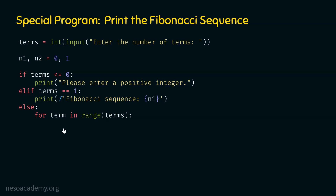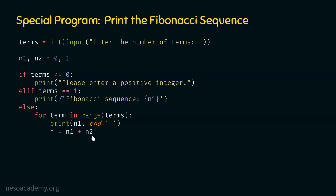Within this for loop, we need a print statement: print(n1, end=' '). In each iteration, we will print the value of n1. In the first iteration, n1 is equal to zero, so zero will be printed. Then we will print one, one, two, three and so on, calculating values accordingly. After the print statement, we calculate n1 plus n2 to obtain the next term in the sequence. Let's say n is the variable pointing to the result of n1 plus n2.